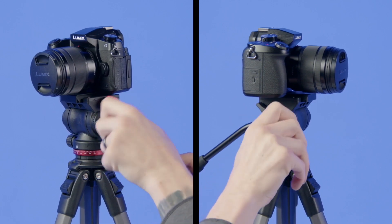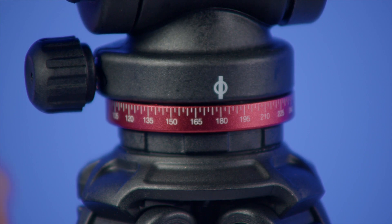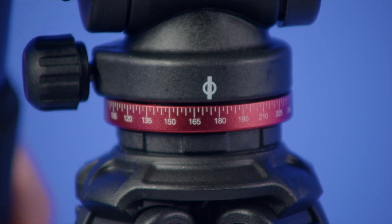The pan handle is designed to attach to either side of the head to accommodate various users' needs. Perfect for panoramic shooting, the Video Pro 6240 has degree markings at the base of the pan head.